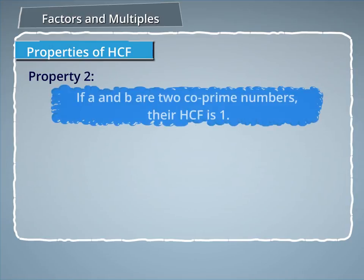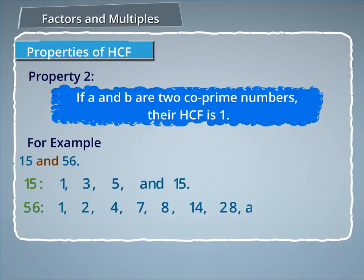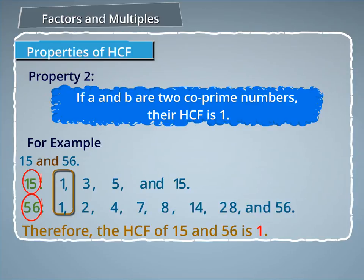Property 2: If A and B are two co-prime numbers, their HCF is 1. For example, consider 15 and 56. The factors of 15 are 1, 3, 5, and 15. The factors of 56 are 1, 2, 4, 7, 8, 14, 28, and 56. Since 15 and 56 have no common factor except 1, they are co-prime. Therefore, the HCF of 15 and 56 is 1.